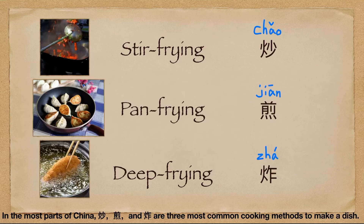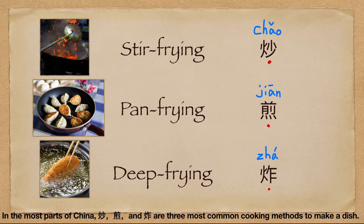In the most part of China, 炒, 煎, and 炸 are the three most common cooking methods to make a dish. 炒, 煎, 炸.